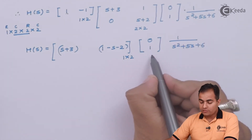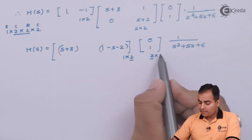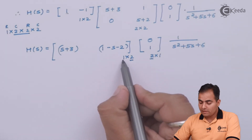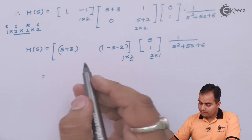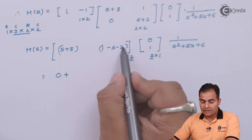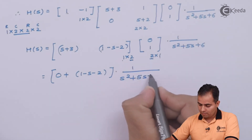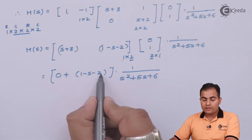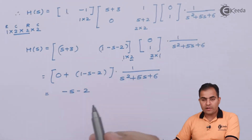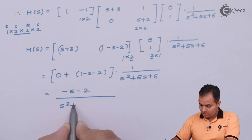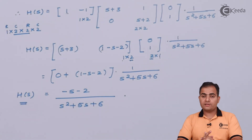The B matrix has 2 rows and 1 column. Multiplying 1×2 with 2×1, the adjacent similar values cancel, giving a 1×1 result. So: 0×(S+3) is 0, added with 1×(1−S−2). Simplifying: 1−2 is −1, so we get −S−1. This result multiplied by 1/(S²+5S+6) gives the transfer function H(s) = (−S−1)/(S²+5S+6). This is how we obtain the transfer function from the state variable model.